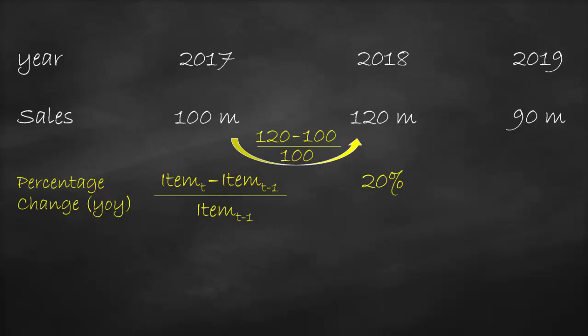The percentage change in 2019 is $90 million minus $120 million, all divided by $120 million, which is equal to negative 25%. This means that the company has lower sales by 25% in 2019 compared to the previous year of 2018, and so on for each item in the income statement.